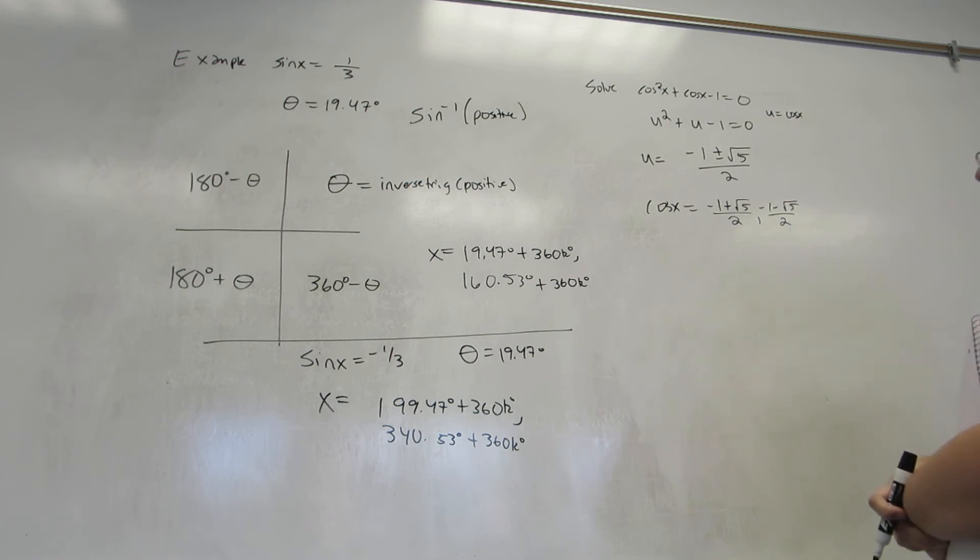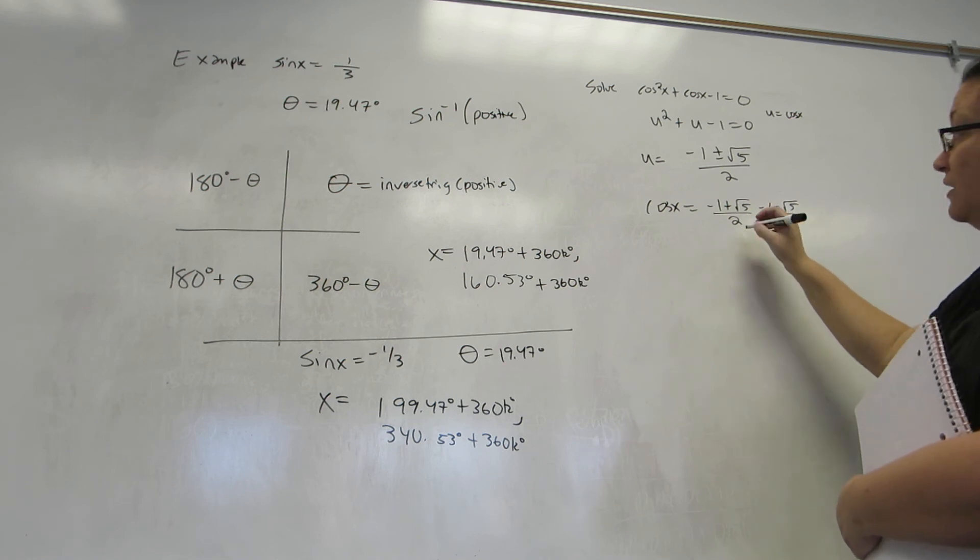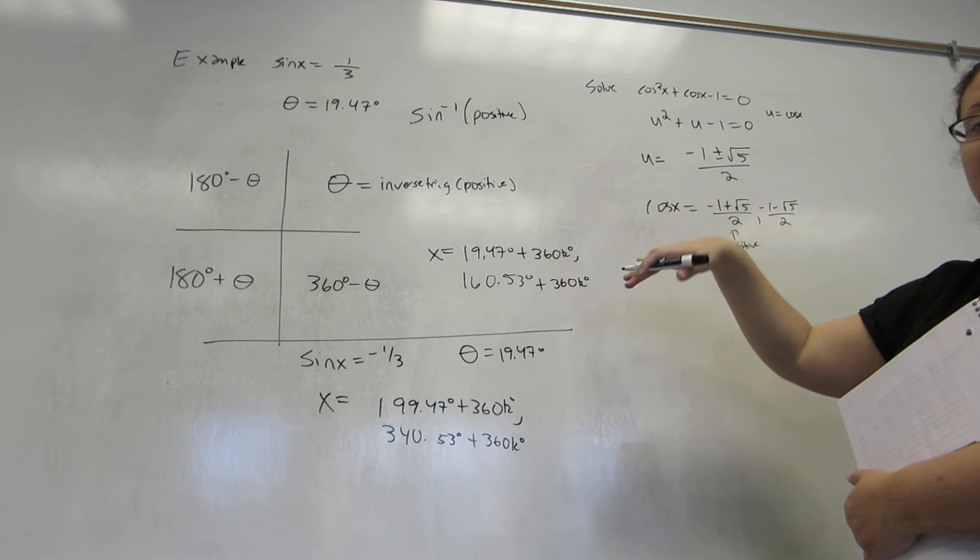Now, we have to do a little checking. Square root of 5 is a number between 2 and 3. Negative 1 plus 2 something is 1 something. Divided by 2 is about 0.75-ish. So, this is an okay answer. It's within the range of cosine, which is negative 1 to 1. And it's a positive answer. Because it's very critical we know if it's a positive or negative number.